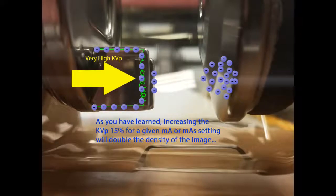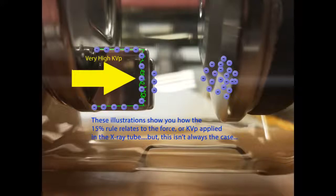As you have learned, increasing the KVP 15% for a given mA or mAs setting will double the density of the image. These illustrations show you how the 15% rule relates to the force, or KVP, applied in the x-ray tube, but this isn't always the case.